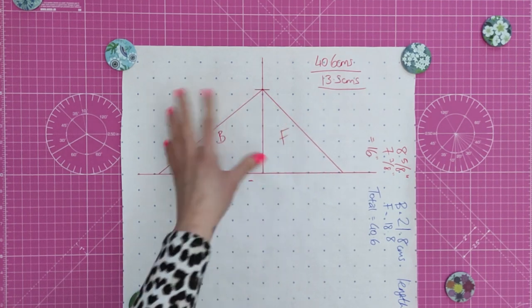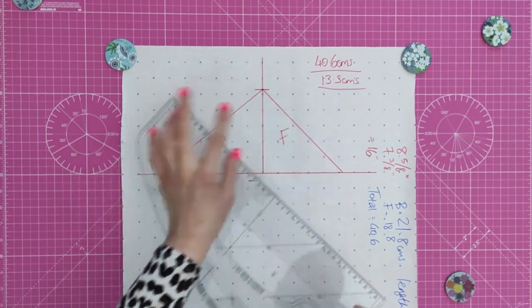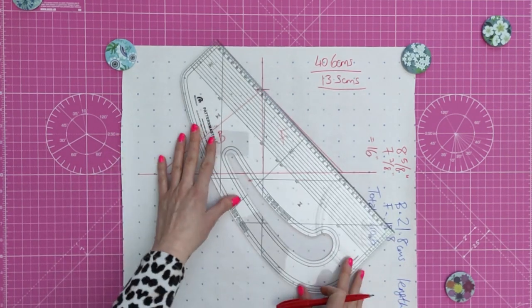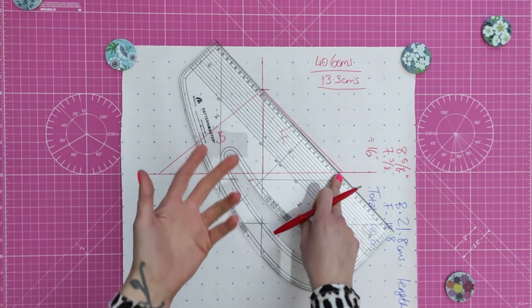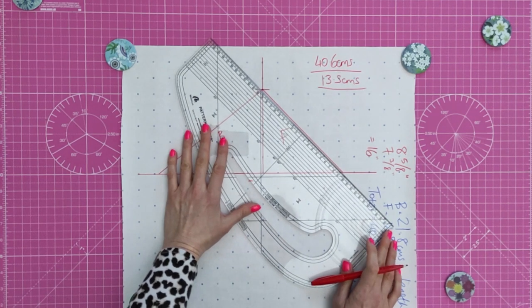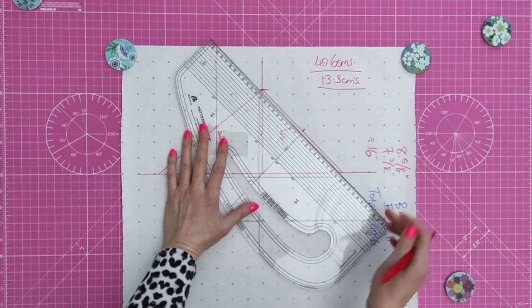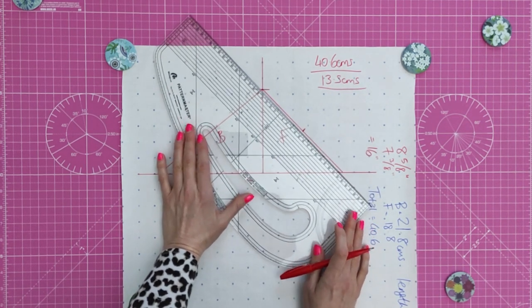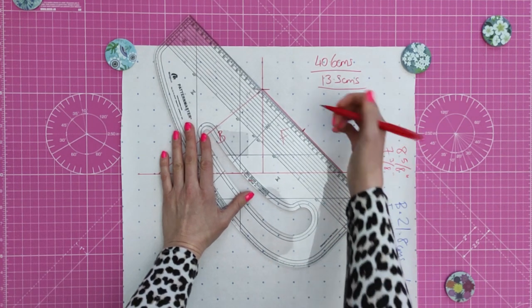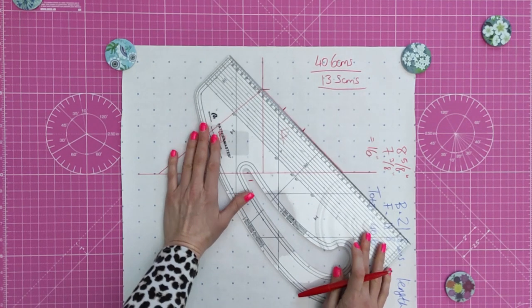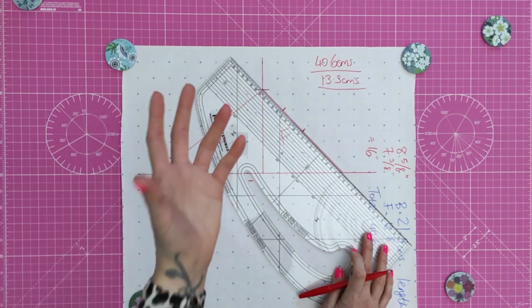Now we want to draw our curve shape. For the front armhole, this is nice and easy. We want to split this line in two. You can either measure it, or you can use your pattern master and make each of the numbers say the same thing either end. Mine's pretty easy maths, it's 9.4. I am going to go ahead and draw the center of that line. Then, I'm going to halve it again, which is 4.7, and then I'm going to halve this space again too. So, I'm splitting this line into four equal sized measurements.